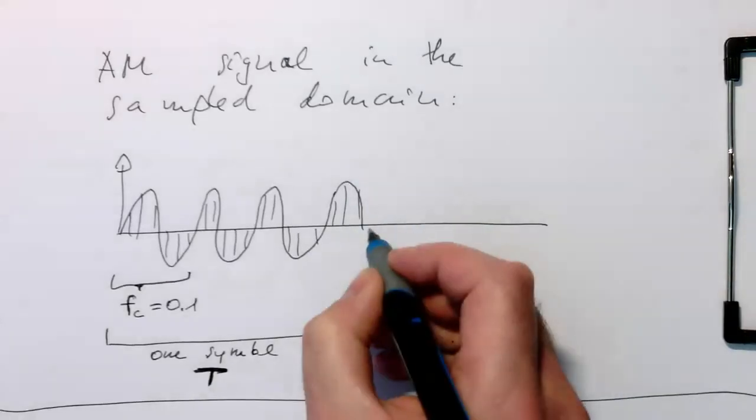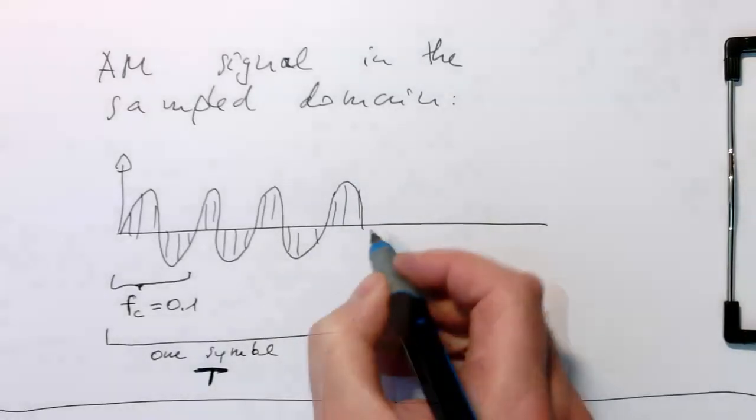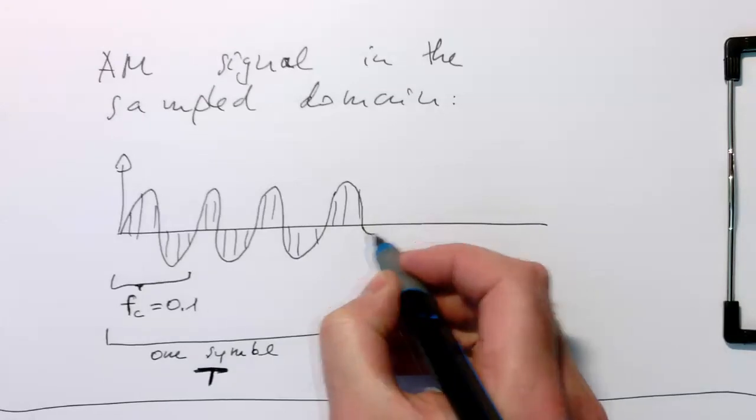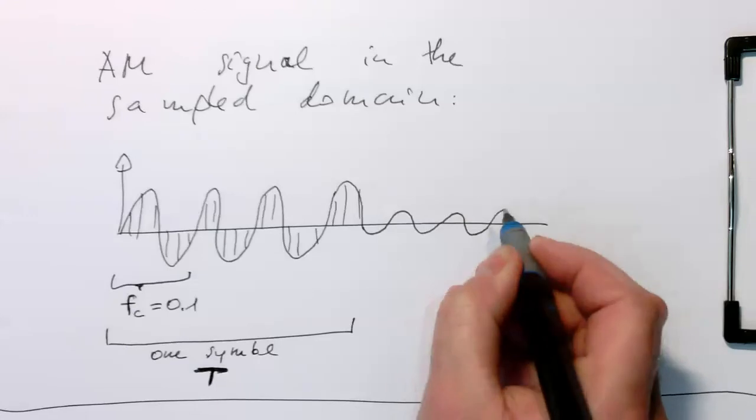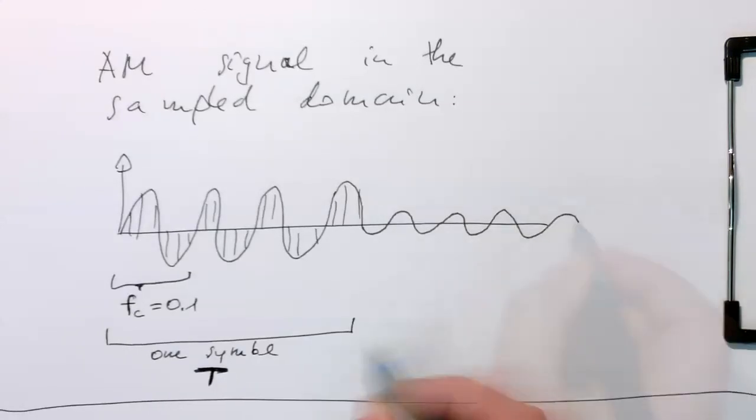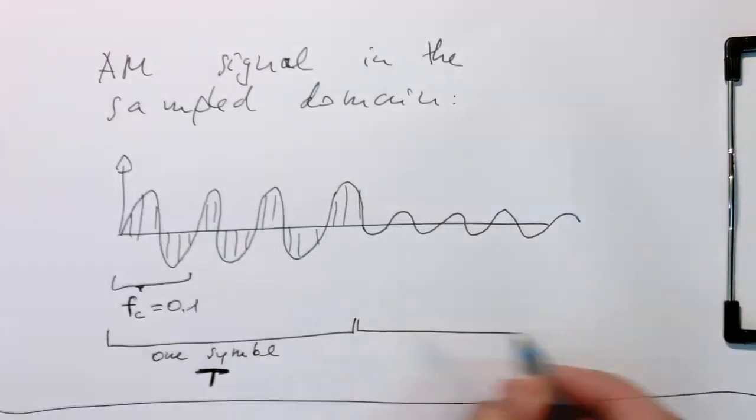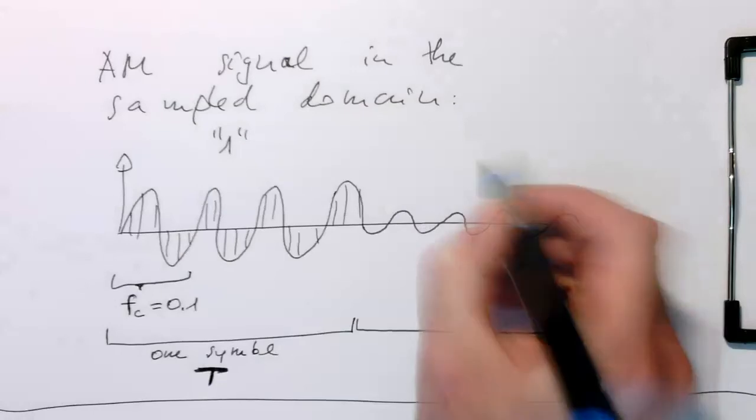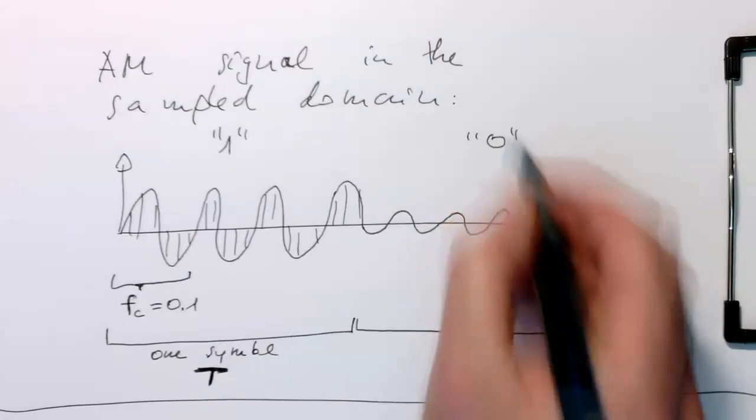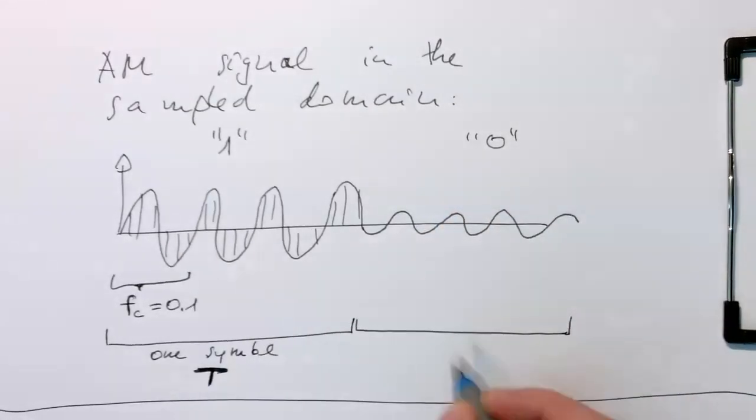Imagine here we are switching to the other symbol. Then in terms of amplitude modulation, this would just become smaller here. That's the next symbol. Let's say this one here was a binary one, and this was binary zero, so we have this a bit smaller. And so this again lasts T. That's another symbol.